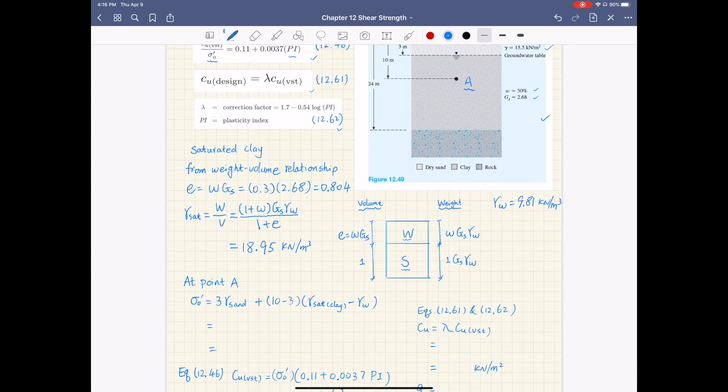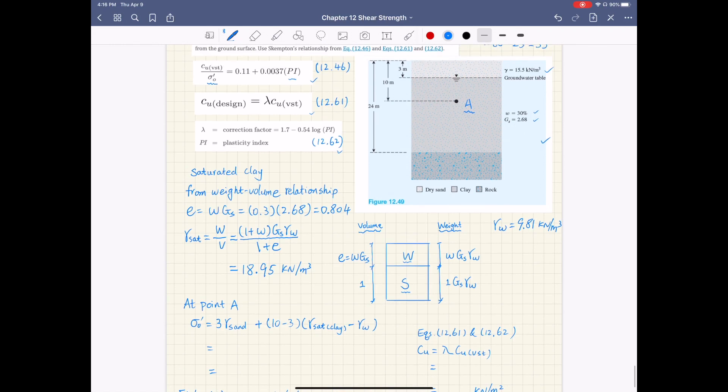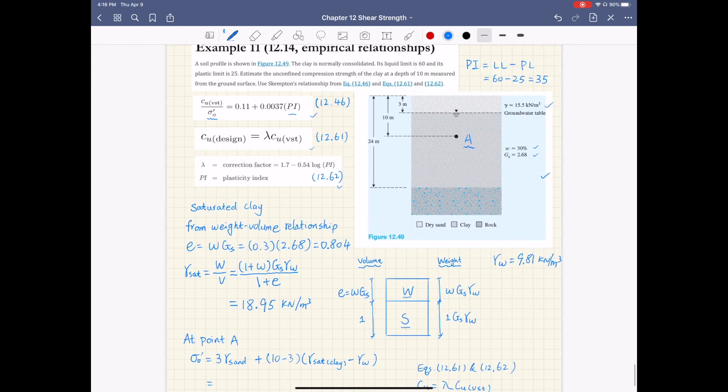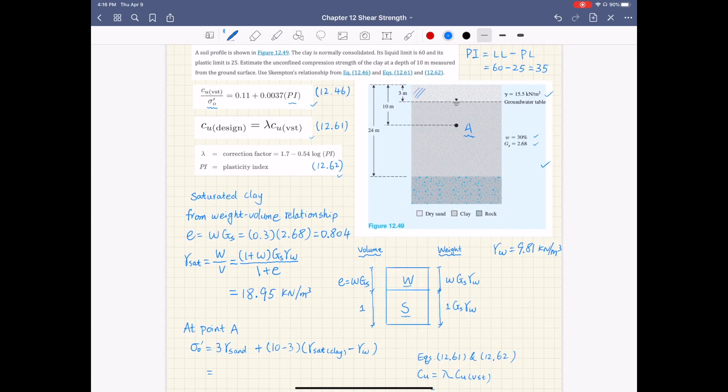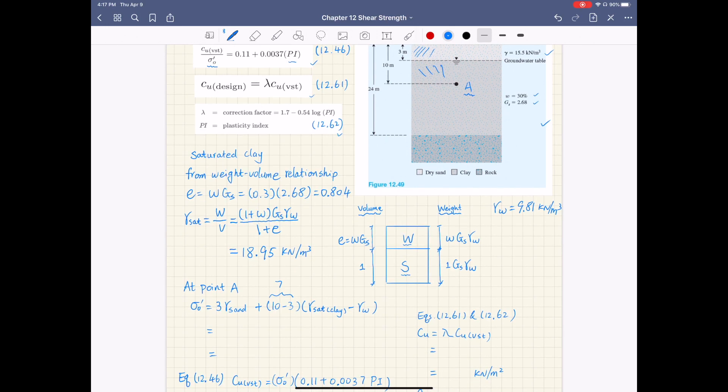So at point A, the effective overburden pressure is basically 3 times the unit weight of sand, so that's 3 meters of dry sand layer, plus 10 minus 3, so that's 7 meters of clay layer. For effective stress calculation, we use the buoyant unit weight. That's why we have gamma saturated clay minus unit weight of water. That's basically the buoyant unit weight.